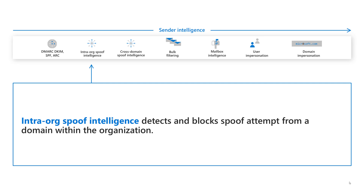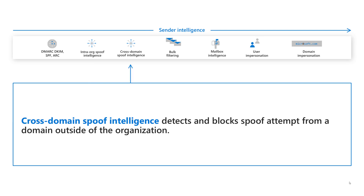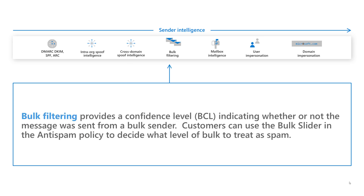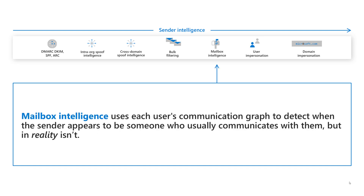Intra spoof intelligence detects and blocks spoof attempts from a domain within the organization. Cross domain spoof intelligence detects and blocks spoof attempts from a domain outside the organization. Bulk filtering provides a confidence level indicating whether the message was sent from a bulk sender, and customers can use the bulk slider in the anti-spam policy to decide what level of bulk to treat as spam. Mailbox intelligence uses each user's communication graph to detect when the sender appears to be someone who usually communicates with them, but in reality isn't.